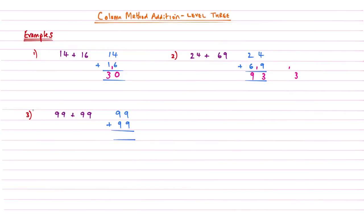Moving on to example number 3: we look at our first column — 2 nines gives me an answer of 18, so I'm carrying my 1 and writing my 8 underneath the first column. Then in the second column, again 2 nines is 18, but I need to add this 1 that's being carried, so that gives me 18 add 1, which is 19. Because this is a two-digit number and we're finished with this calculation, we write that 1 underneath our invisible column. So the answer to example number 3 is 198.